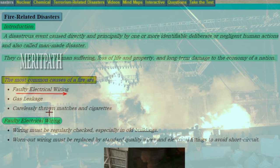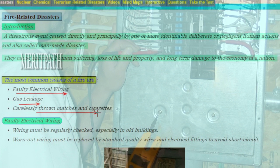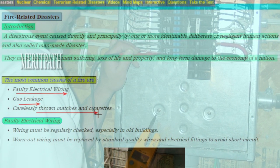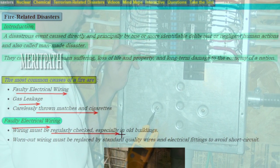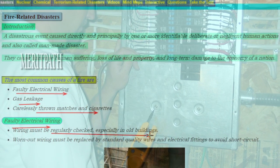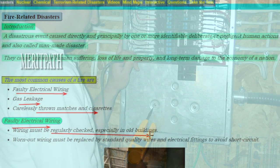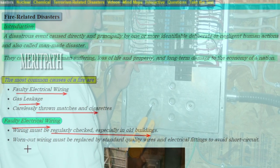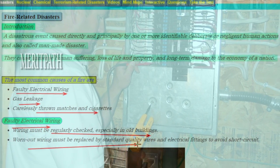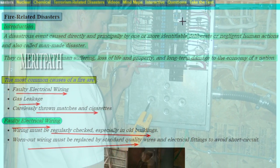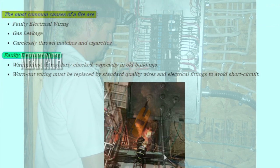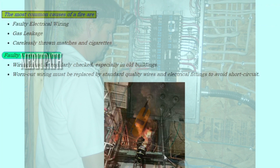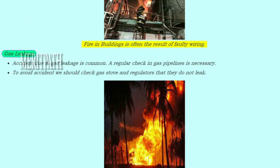First, we shall discuss about faulty electrical wiring. Wiring must be regularly checked, especially in old buildings, as these cause severe fire accidents. Worn out wiring must be replaced by standard quality wires and proper fittings to avoid short circuits. Here is an image showing a fire accident caused due to faulty wiring in a building.